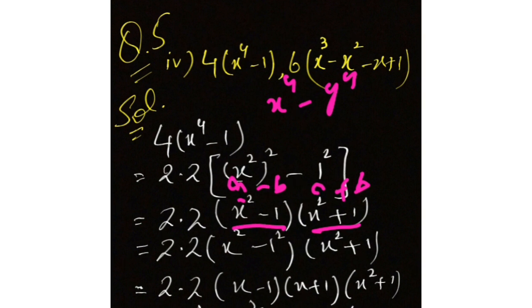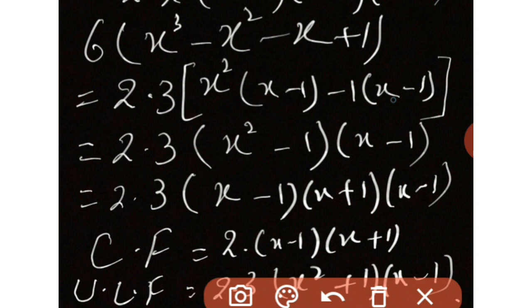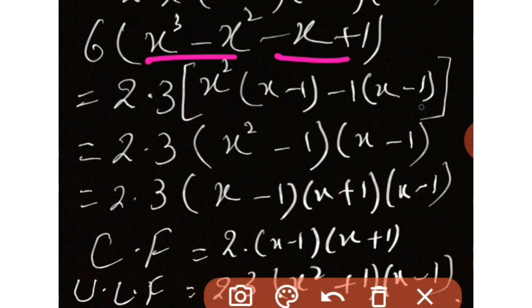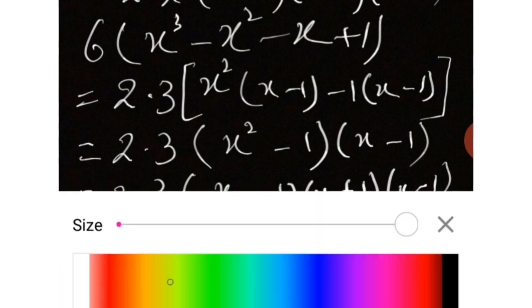Ab humne dubara dekha toh yeh x² minus 1 — a² minus b² ka formula hai, then it will be (a minus b)(a plus b), aur yeh as it is aa jaega. Second value ki taraf chalein: 6 into (x³ minus x² minus x plus 1). Girls, 6 ke factors 2 aur 3 ban jaenge. Jaise abhi humne question 5 ka third part kiya: in pehli do values mein x² common aa gaya, andar bacha (x minus 1); yahan se minus 1 common aaya (x minus 1). In donon ko common nikal diya toh andar bach gaya (x² minus 1). Aur yeh formula ban jaega same — (a minus b)(a plus b).